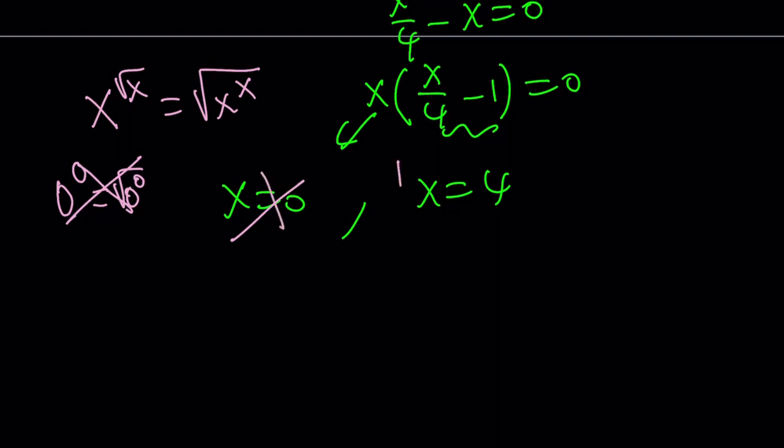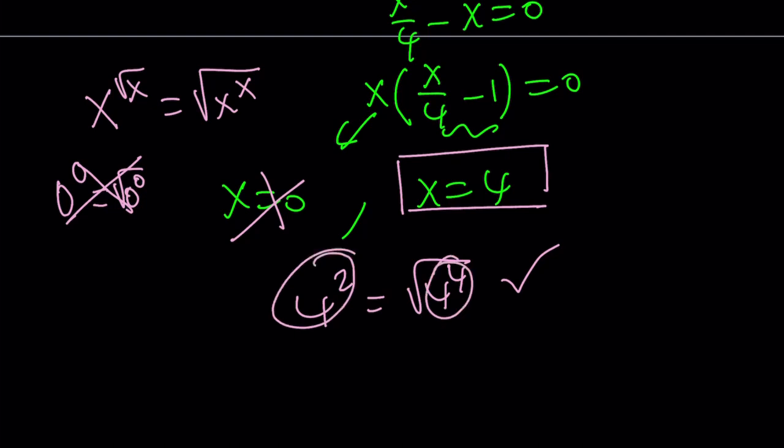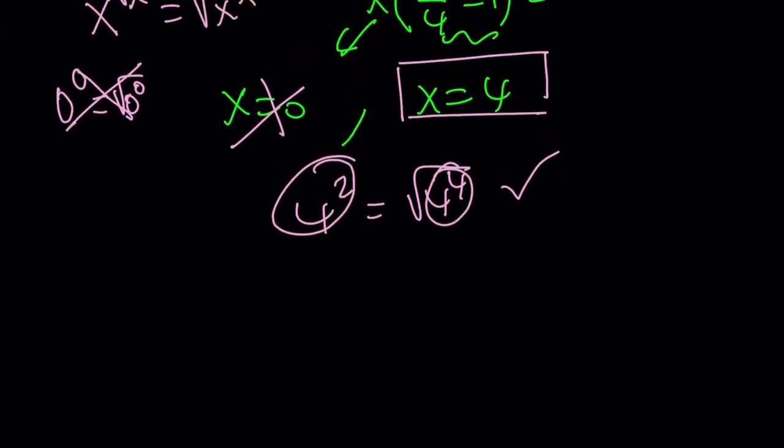Therefore, we end up with x equals 4, which seems to be working. Because if you plug it in, 4 to the power of 2 is equal to the square root of 4 to the 4. That is correct. Because this is 16, that is 256, and you get the idea.